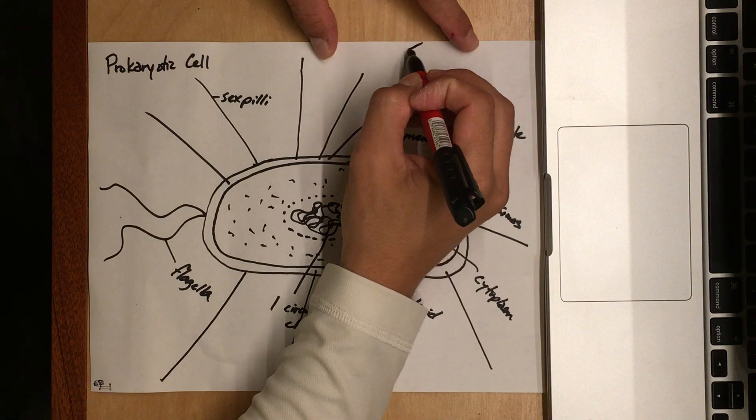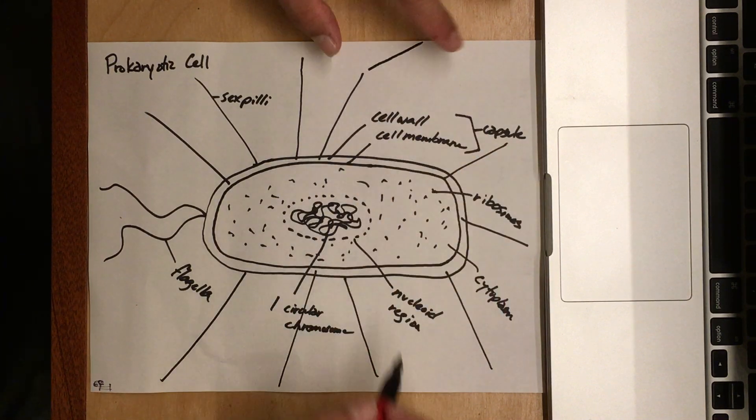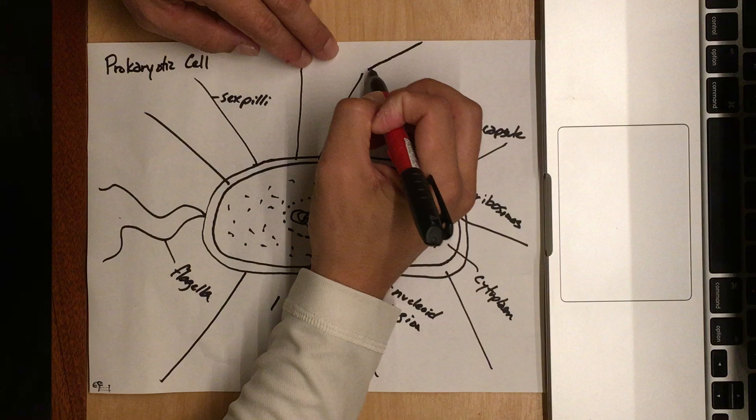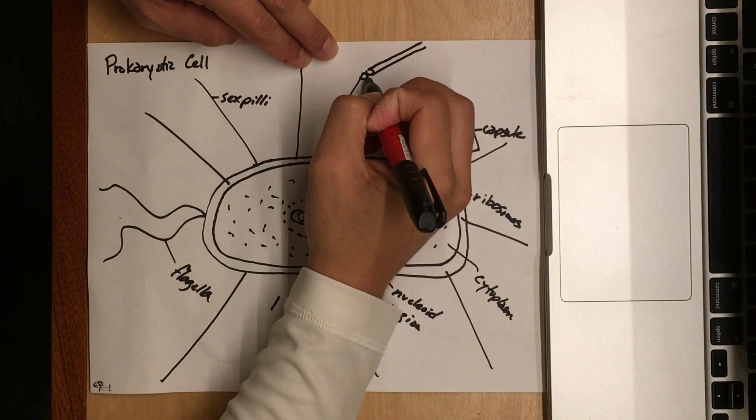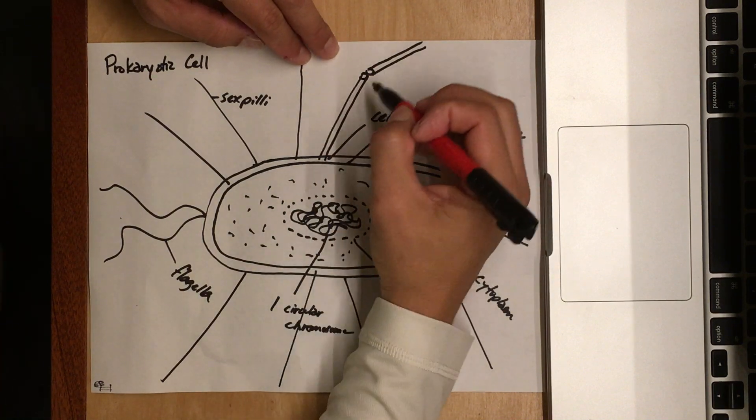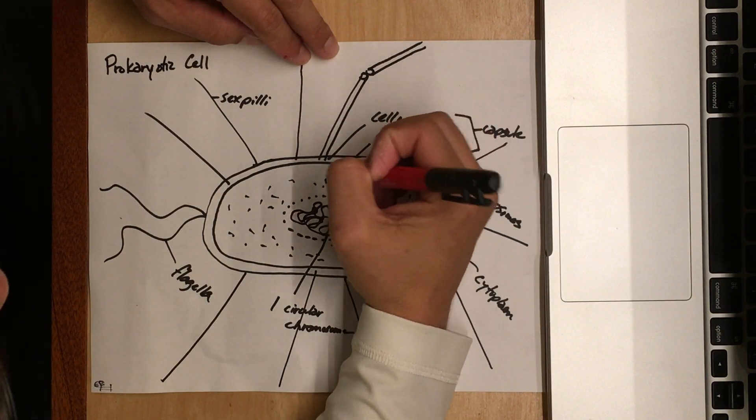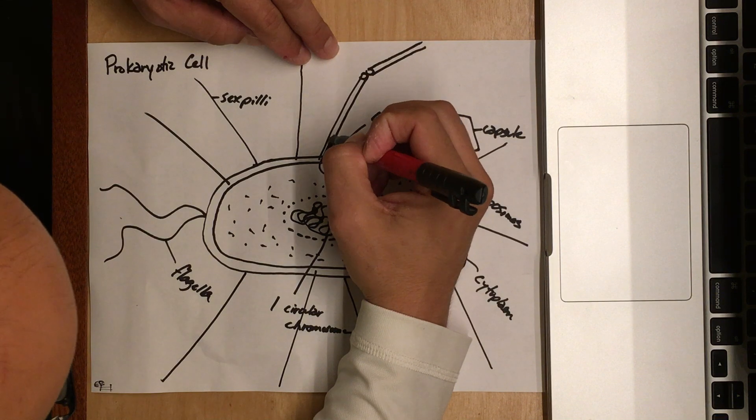These aren't actually sticks—they're more like tubes. If they make contact, DNA is going to travel from the cytoplasm into this guy and go over to that other bacterial cell.